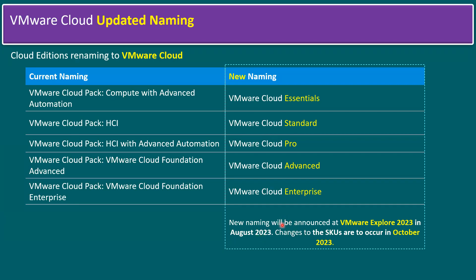The announcement was made in August 2023, and the changes to the SKUs — Stock Keeping Units — occurred in October 2023. The new names are: previously 'Compute with Advanced Automation' is now VMware Cloud Essential, HCI is now VMware Cloud Standard, HCI with Advanced Automation is VMware Cloud Pro, and we also have VMware Cloud Advanced and VMware Cloud Enterprise — giving us five editions total.